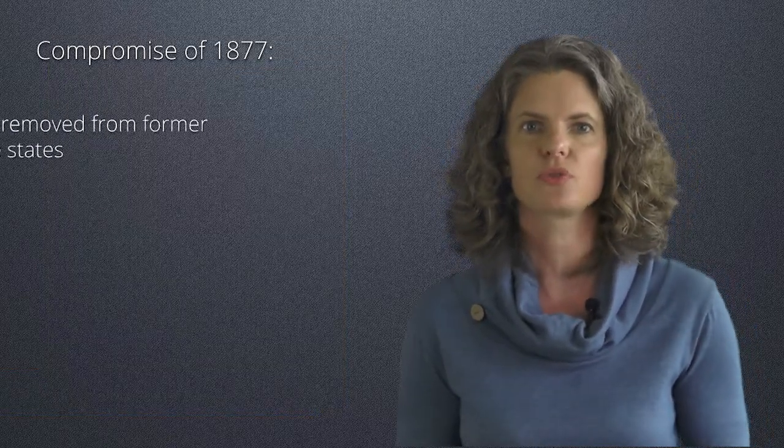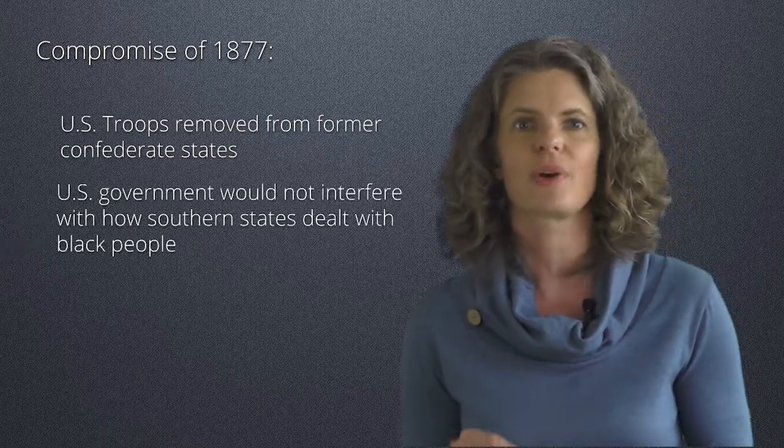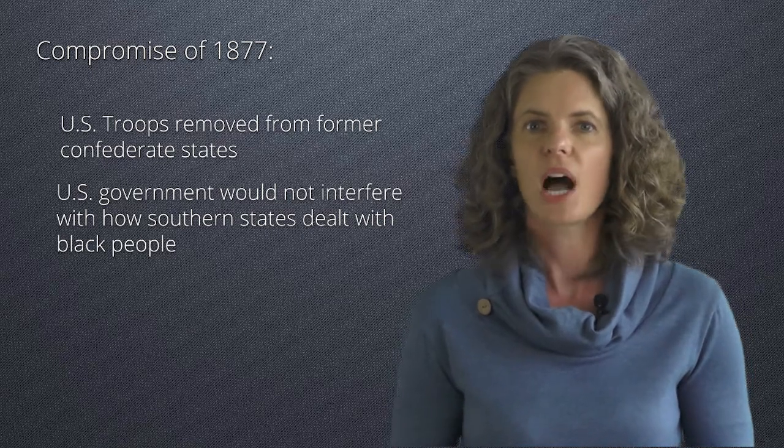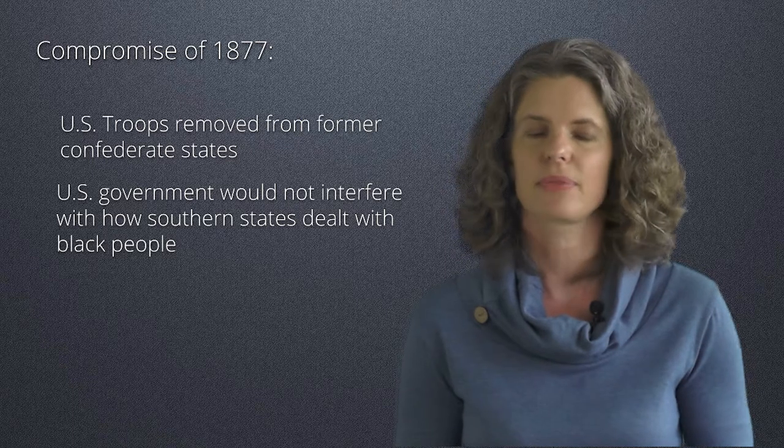As president, Hayes would remove the last US troops from former Confederate states and would not interfere with how southern states dealt with black people. It was a compromise with devastating effects for black people in the south. Reconstruction was over.